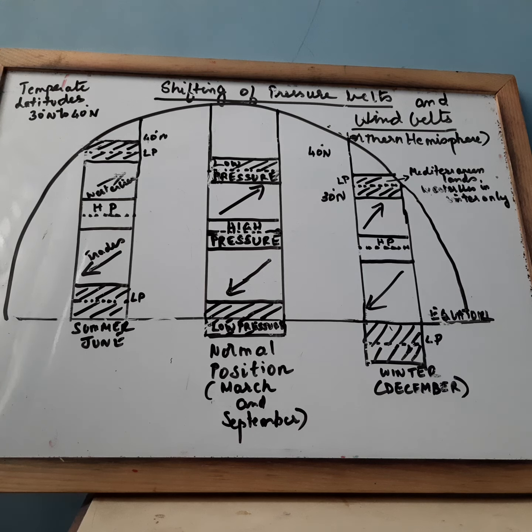Not all the western coasts of temperate zone receive westerlies throughout the year. Some of them like California, Iberia, Central Chile, Southern Africa and Southwestern Australia receive westerlies only in winter.